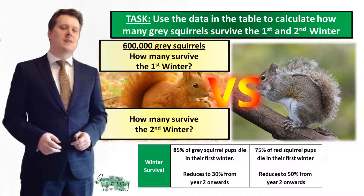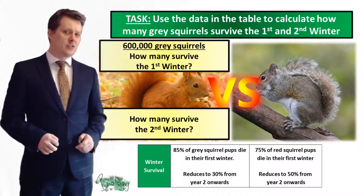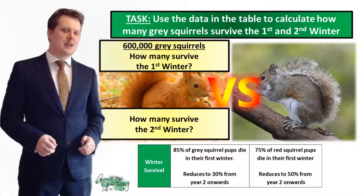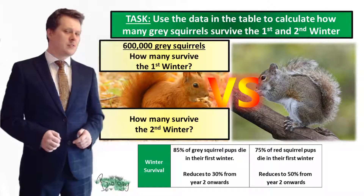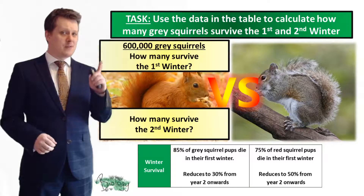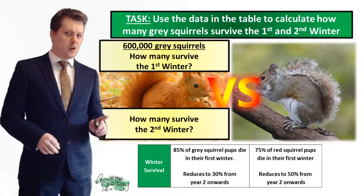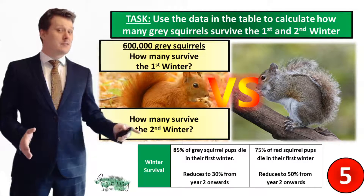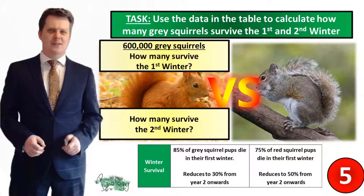We've got two more questions before we wrap this lesson up. If we've got 600,000 squirrels living within a habitat, use the data in the table to calculate how many of that 600,000 are going to survive their first winter, and then use your answer to calculate how many of those original 600,000 would survive their second winter. Pause the video if you need more time.